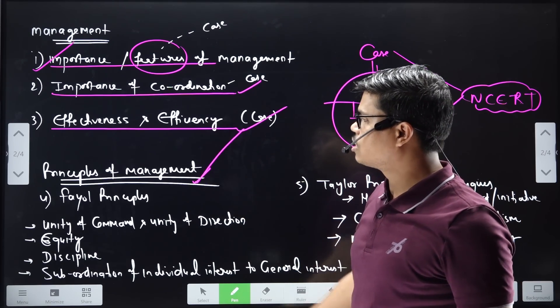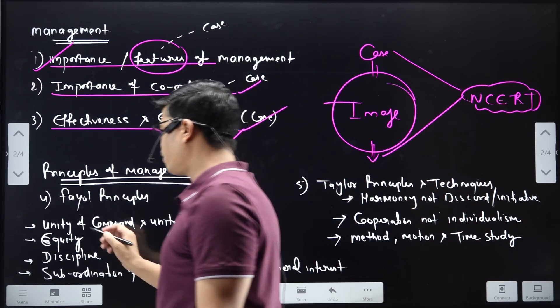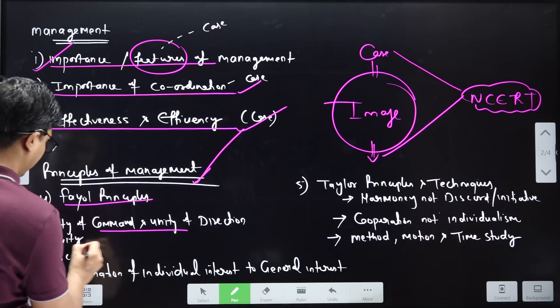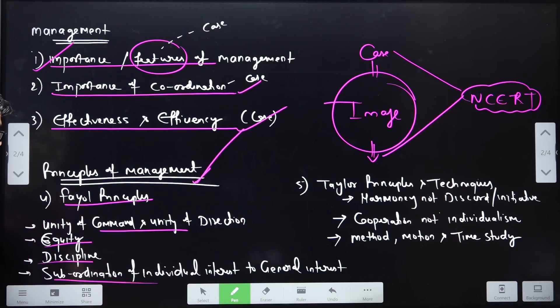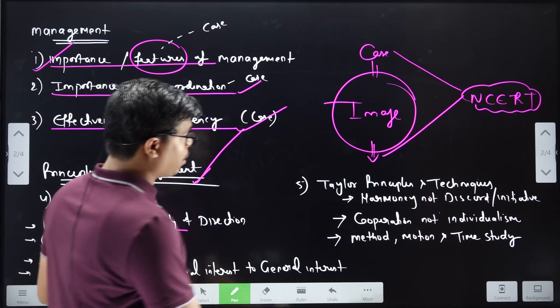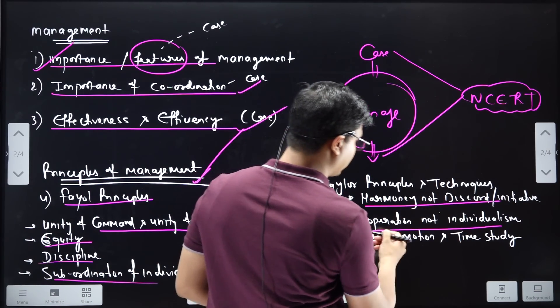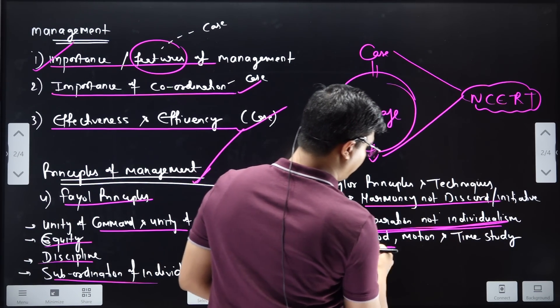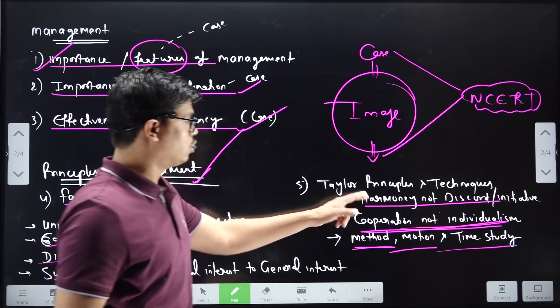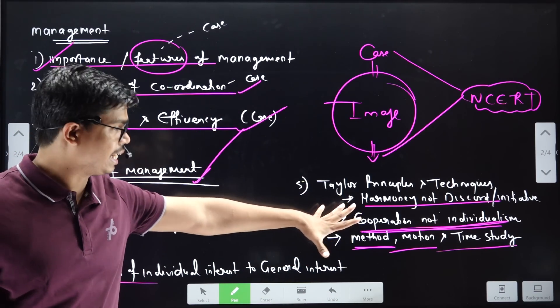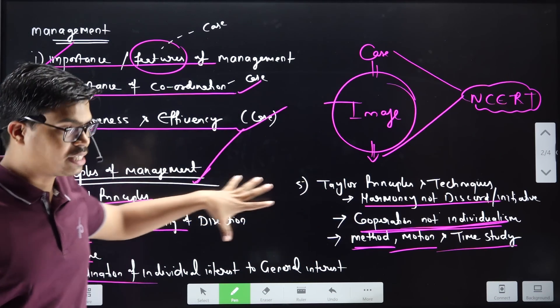The next part is the principles of management. There are some principles like unity of command, equity, discipline, subordination of individual to general interest. And Taylor's principle - how? Not discord, it is called cooperation not individualism, method, motion and time study. So these are the principles and techniques. I will talk about the second chapter.